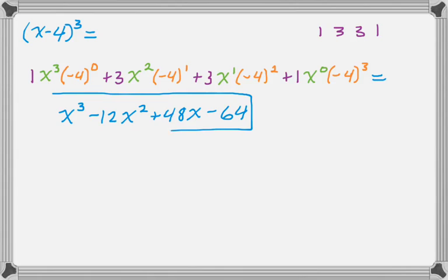Alright, so hopefully you're seeing the pattern here. It's the exponent of the first thing decreases, the exponent of the second thing increases, and we pull the coefficients from the triangle. Let's take a look at this one. We have 2x plus 1 to the 4th. So pretty much the same. We need the fourth row, 1, 4, 6, 4, 1.